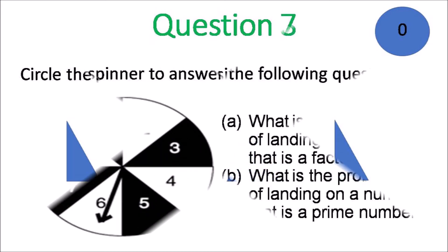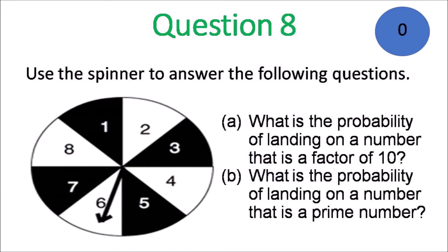Question 8. Use the spinner to answer the following questions. A. What is the probability of landing on a number that is a factor of 10? B. What is the probability of landing on a number that is a prime number?